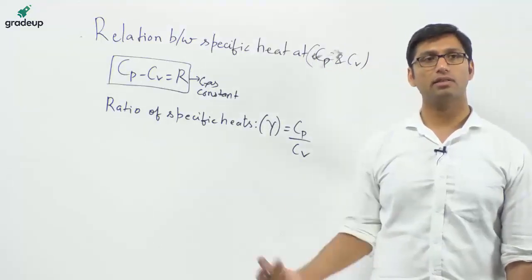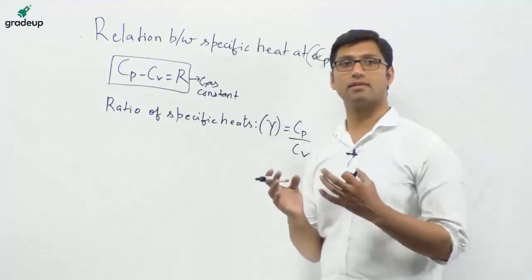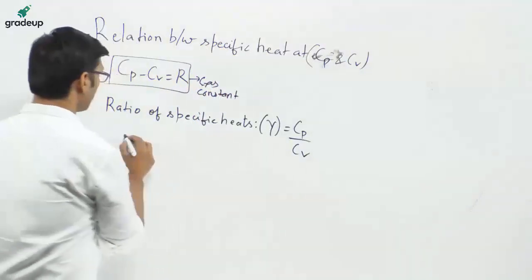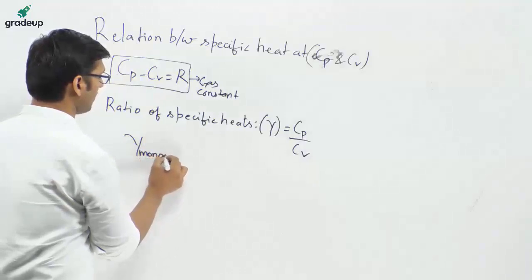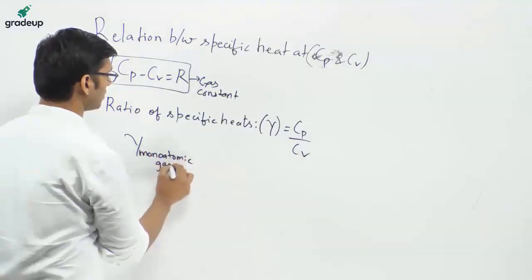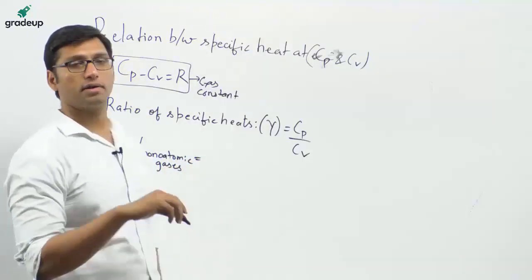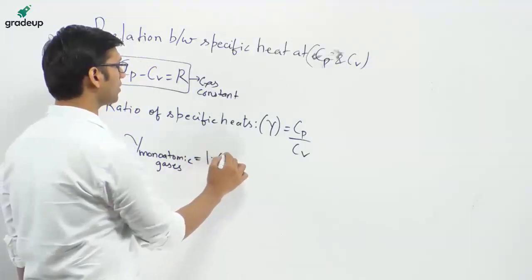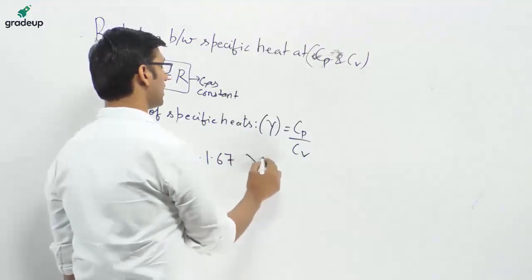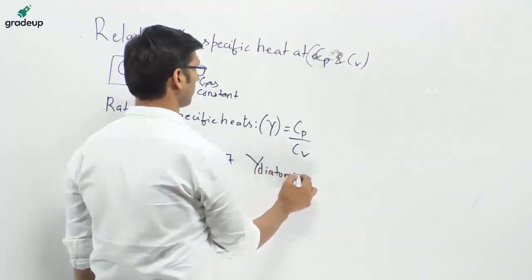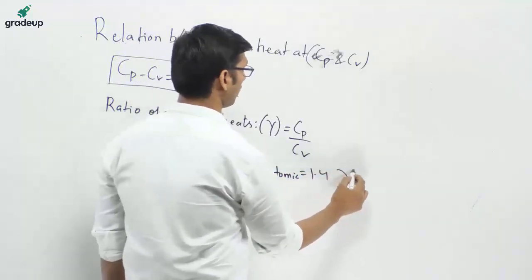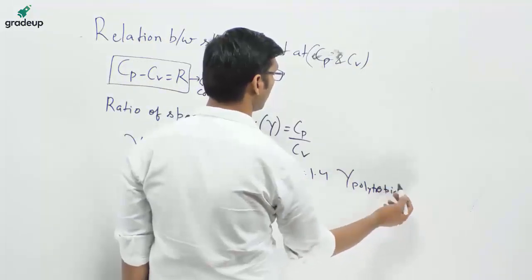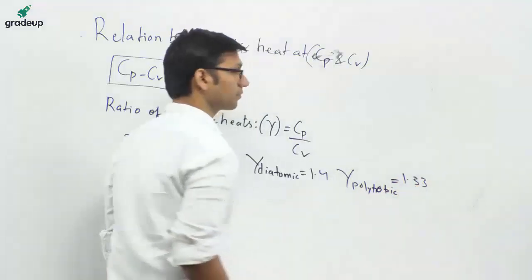This gamma is different for different gases. For monoatomic ideal gases, the gamma value is equal to 1.67. For diatomic gases, it is equal to 1.4. And for polyatomic gases — gases having more than two atoms — it is equal to 1.33.